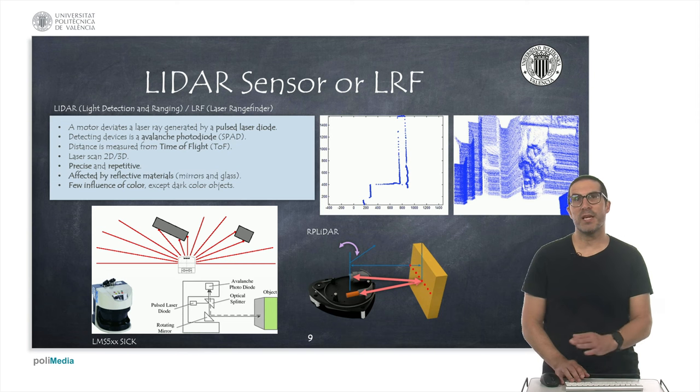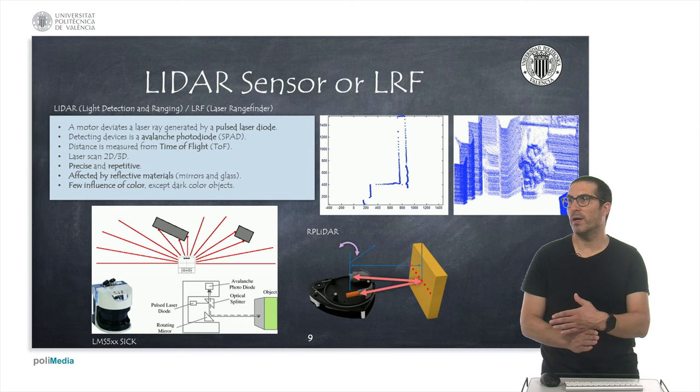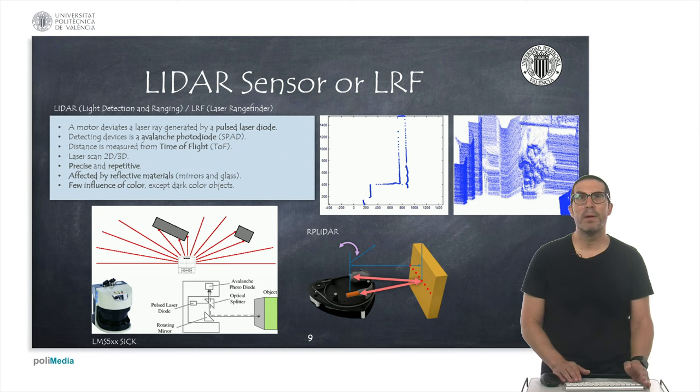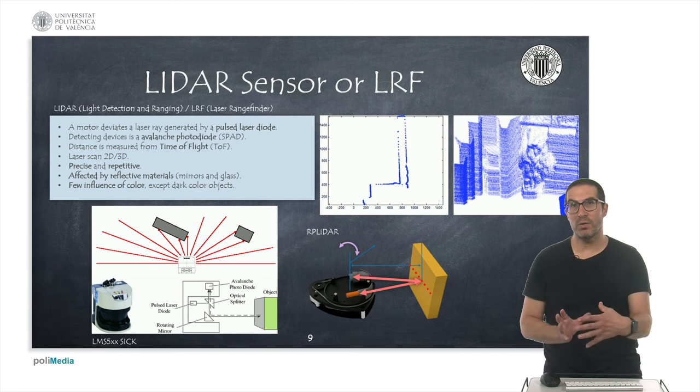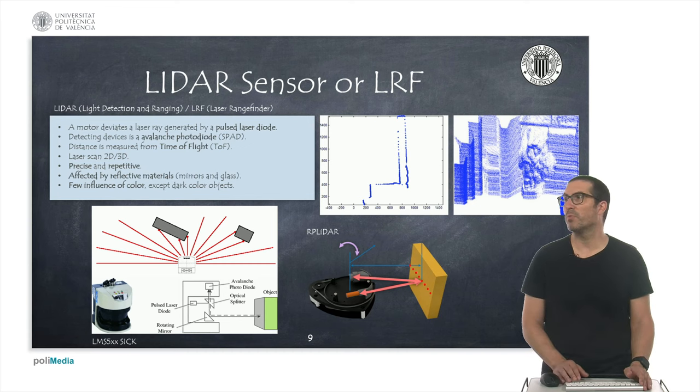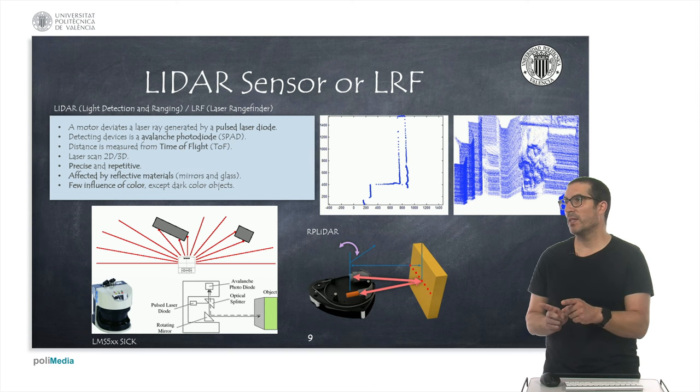And as I said there are models like the laser that rotates in this case a mirror, but there are other models like the RP LiDAR that rotate the entire head in order to perform the scan, so in this case the laser and the photodetector are rotating.